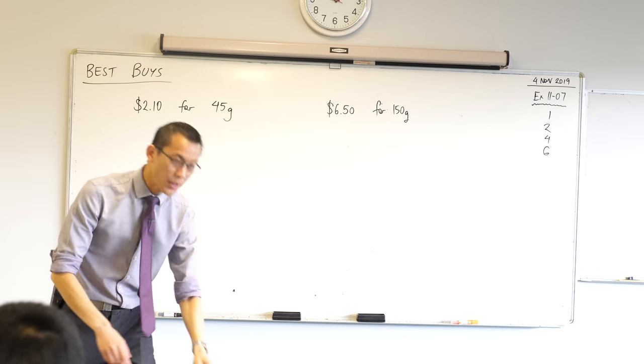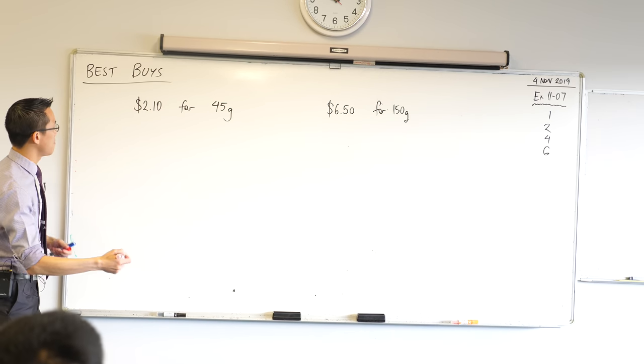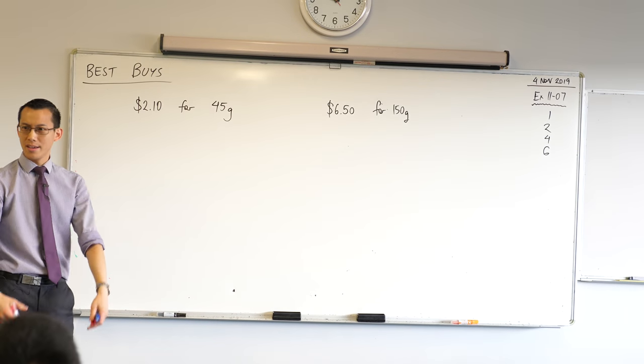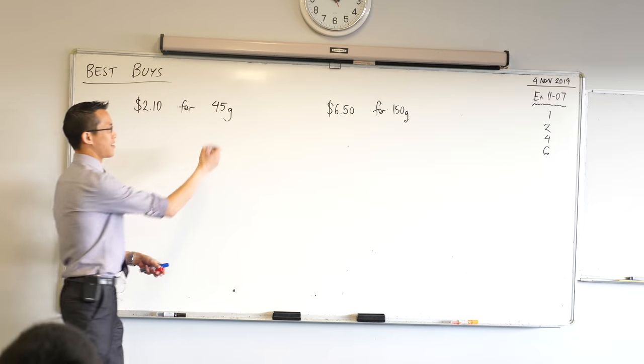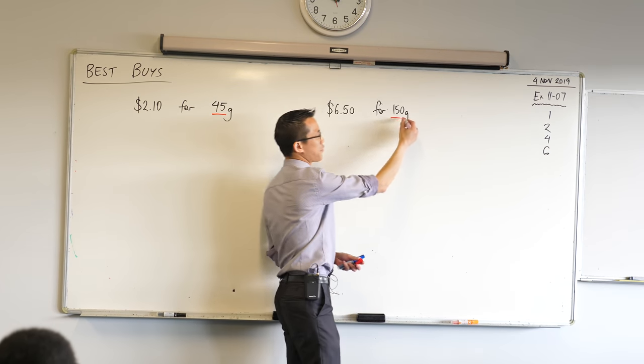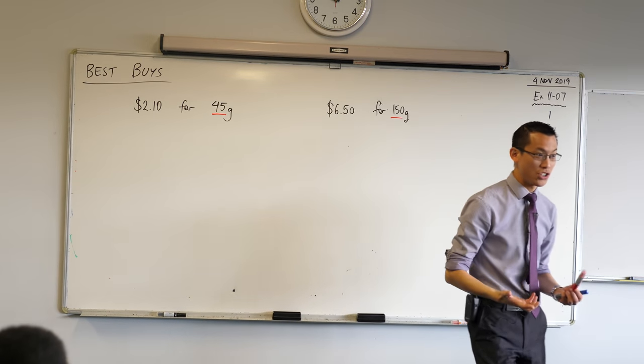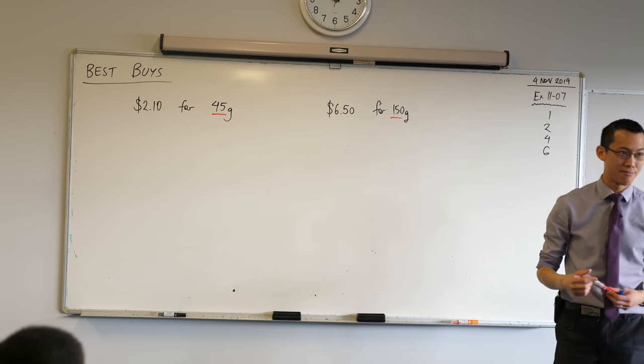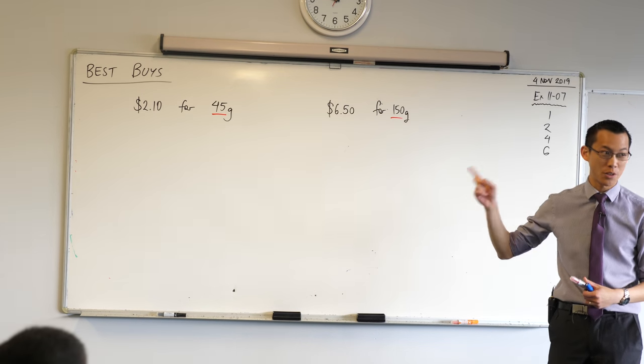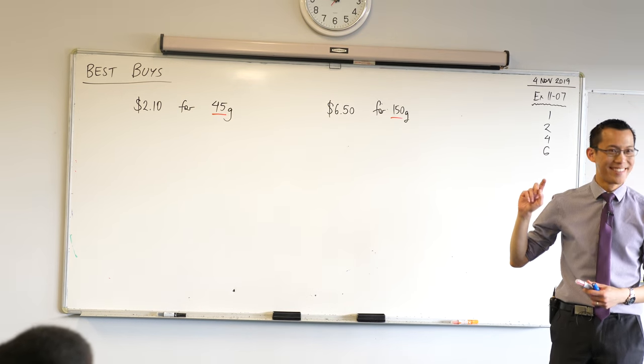Now we know, in general, when you see the same item, maybe it's like a bag of sugar or something like that, and you can see two different sizes. In general, which is cheapest? In general, is it the smaller one or the bigger one? Interesting.